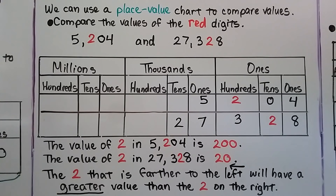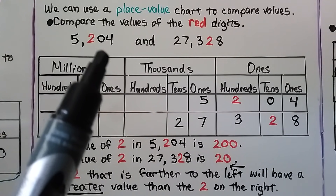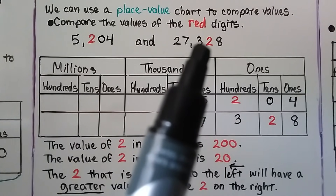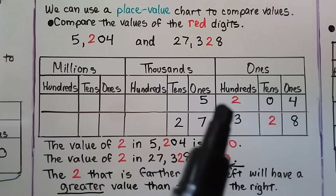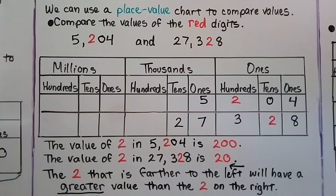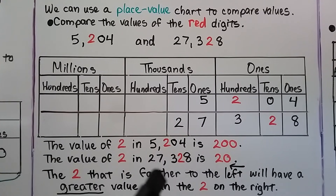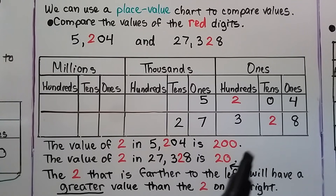We can use a place value chart to compare values. We're comparing the values of the red digits — here we have a red two, and here we have a red two. We write 5,204 into the place value chart and 27,328 into the place value chart. We can see that the two in 5,204 is two hundreds, and the two in 27,328 is only two tens. The two that is farther to the left will have a greater value than the two that is to the right.